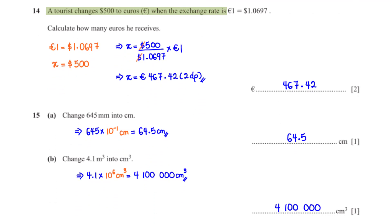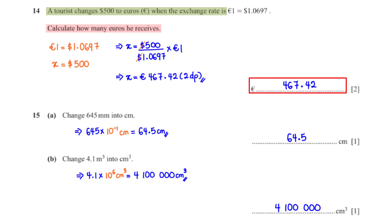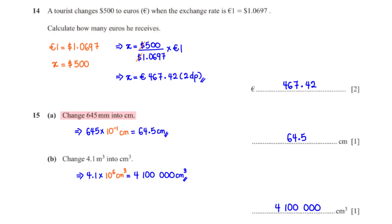A tourist changes $500 to euros when the exchange rate is 1 euro equals 1.0697 dollars. Calculate how many euros he receives. We set up the currency conversion to find the equivalent of $500 in euros. When we cross-multiply and make x the subject, this gives us 467.42 euros rounded to two decimal places.